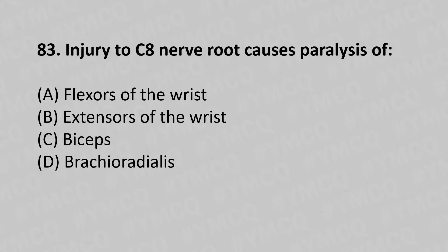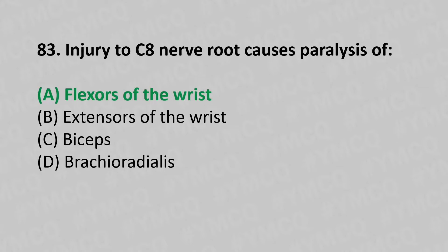Moving to our 83rd question. Injury to the C8 nerve root causes paralysis of: option A flexors of the wrist, option B extensors of the wrist, option C biceps, option D brachioradialis. The answer is option A, flexors of the wrist.